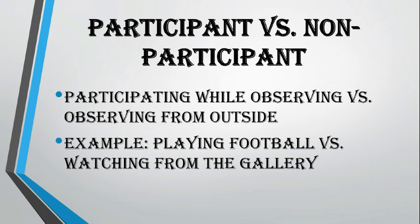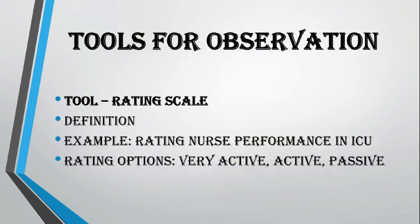Just like other methods, observation also requires specific tools to help the researcher gather and record information effectively. Two common tools used in observation are the rating scale and the checklist. The rating scale is a tool used to evaluate or express an opinion about the performance of a person, object, or situation. For example, when you buy a product online from Amazon or Flipkart, you are often asked to rate your experience or the quality of the product. A rating scale allows the observer to express an opinion or judgment about performance or quality in a structured format.